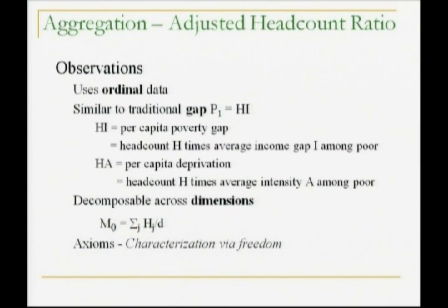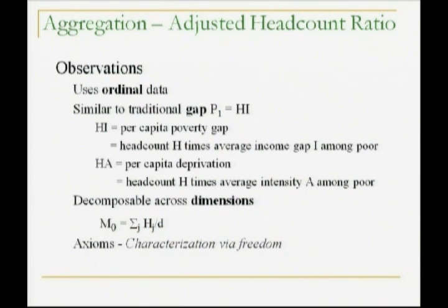You can characterize this measure — the identification and the aggregation — through an approach based on freedom. I have a paper coming out in the Handbook of Social Choice and Welfare in which the theorem is given in that context. Under a certain number of very simple axioms, there's no way besides this of measuring poverty that satisfies the ordinal constraints and so forth a priori.